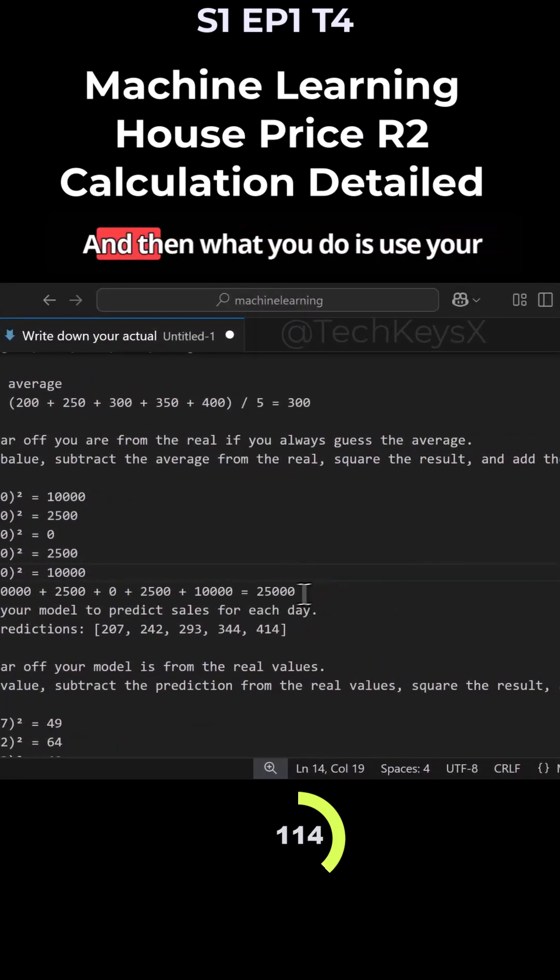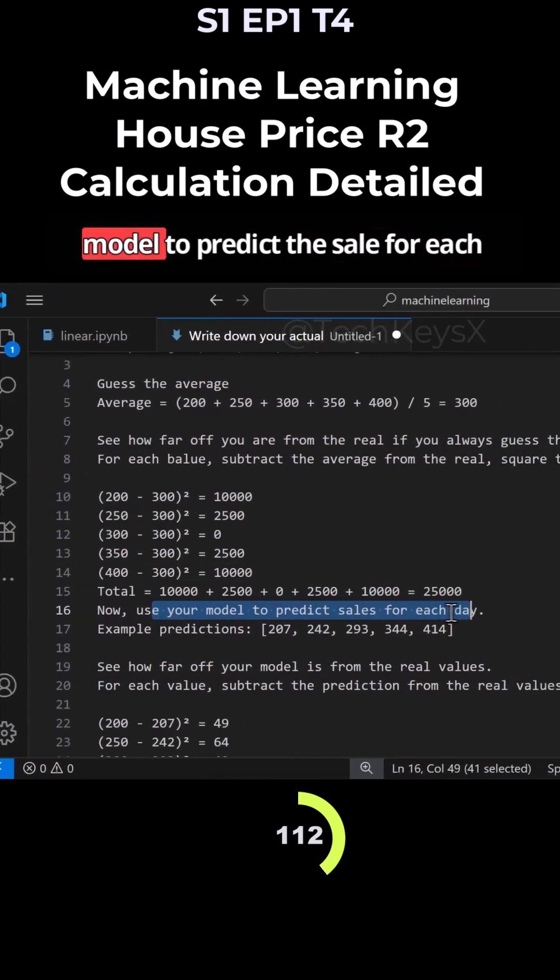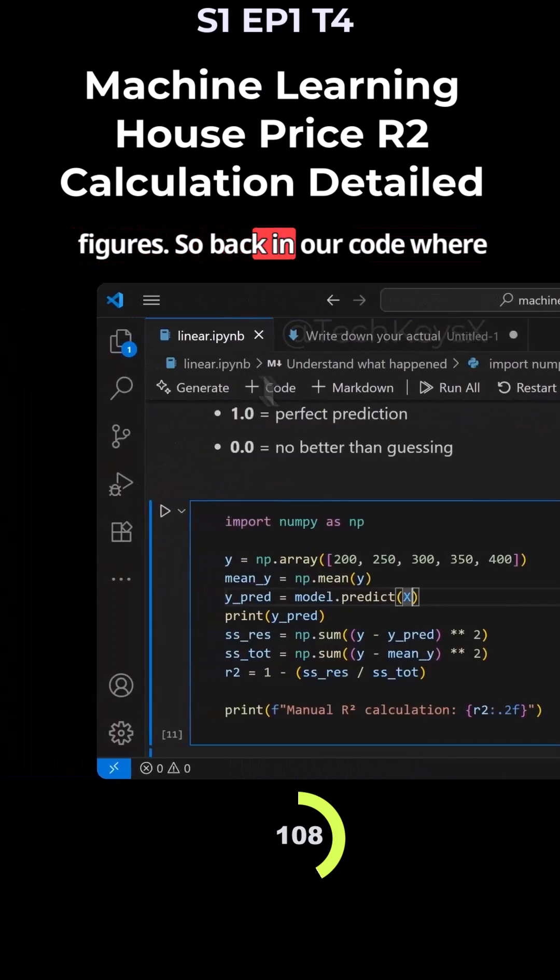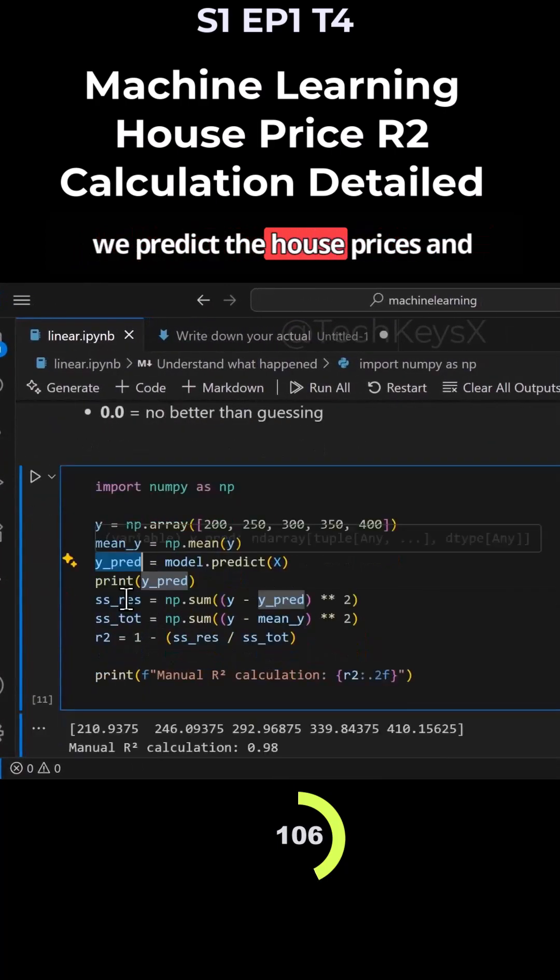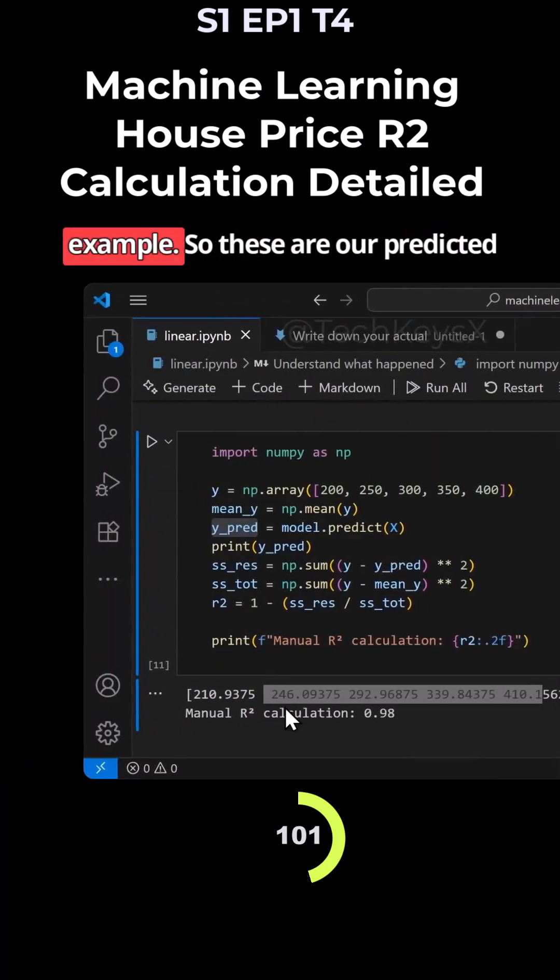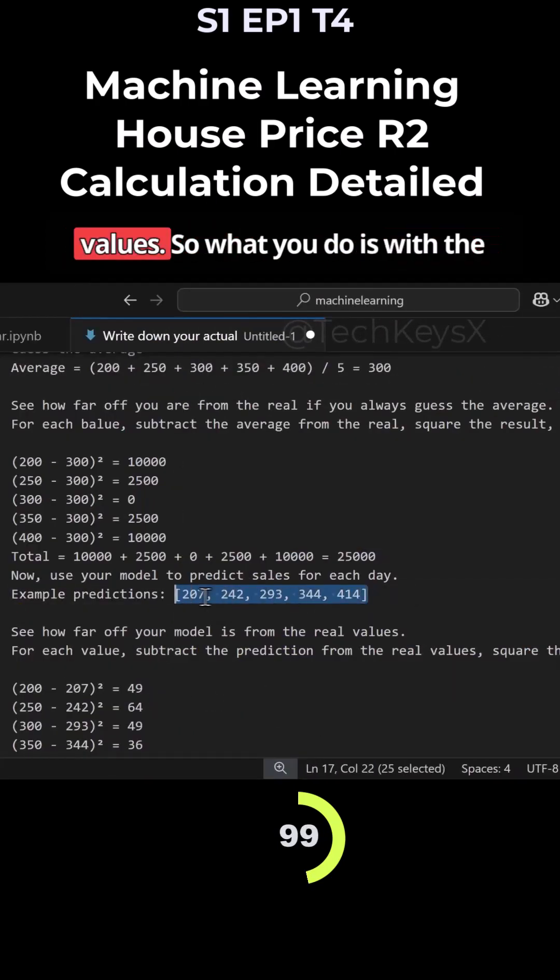So that's now over here, and then what you do is use your model to predict for each day. So now this is the predicted figure. So back in our code where we predict the house prices, these are predictions over here. So what you get is 207 for example. So these are our predicted values.